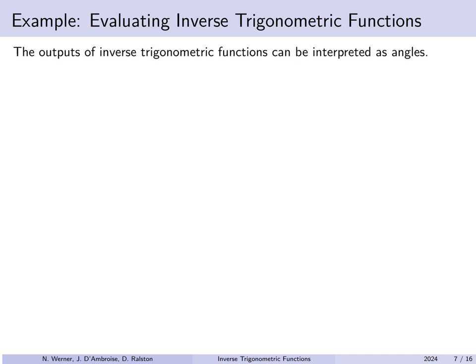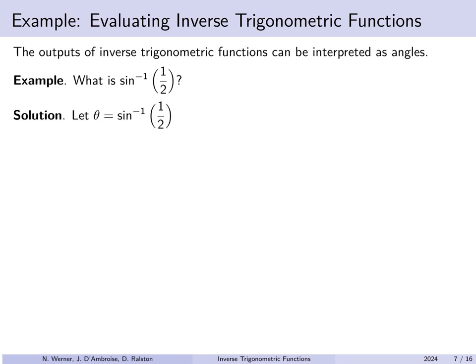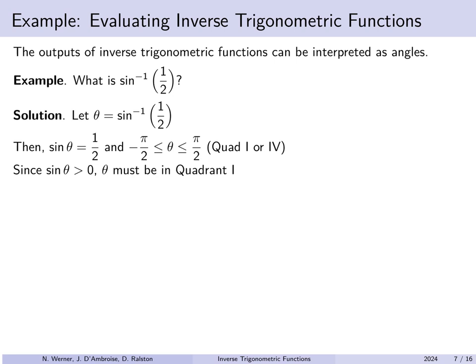The outputs of inverse trigonometric functions are angles. For example, arc sine of 1/2: if theta equals arc sine of 1/2, then the sine of that angle is 1/2 and specifically theta is in quadrant 1 or 4, from minus pi over 2 to positive pi over 2. Since sine is positive, we are in quadrant 1, and pi over 6 is the angle between 0 and pi over 2 whose sine is 1/2. So the arc sine of 1/2 is pi over 6.